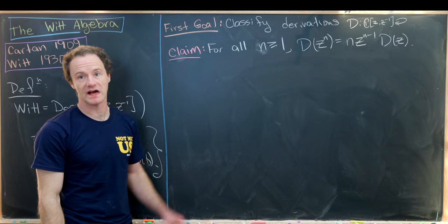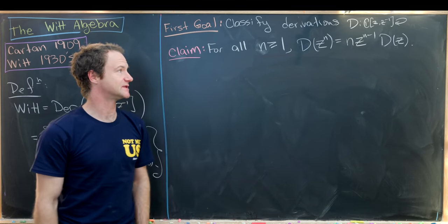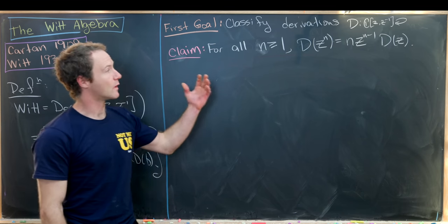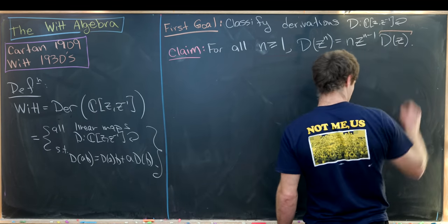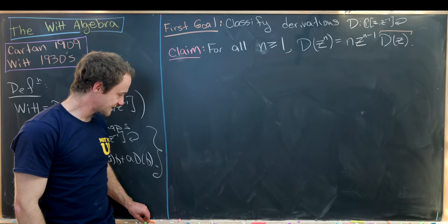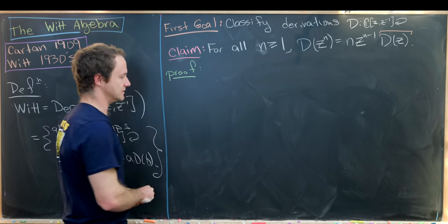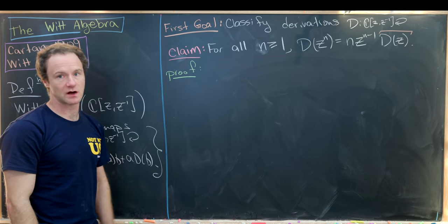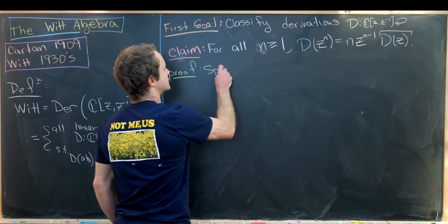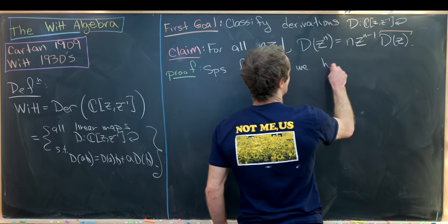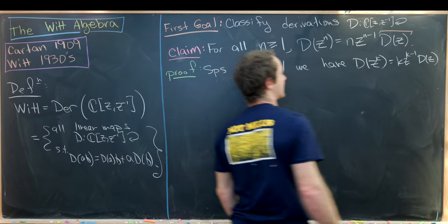We can generalize: for all N ≥ 1, D(zⁿ) = N · z^(N−1) · D(z), where D is any derivation on the Laurent polynomial ring and D(z) can be any Laurent polynomial. We prove this by induction. The base case N = 2 was just shown. For the induction hypothesis, suppose for some K ≥ 1 that D(z^K) = K · z^(K−1) · D(z).